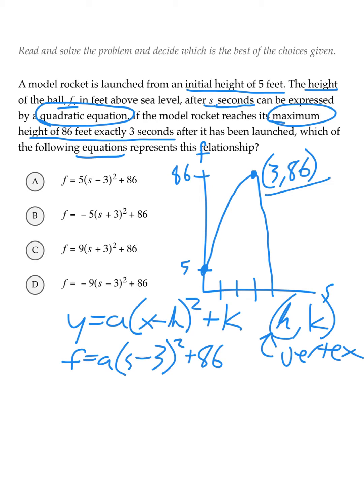We don't know a just yet, but looking at the equations and the answer choices, we could probably get rid of b and c, since they don't have a minus 3 inside the parentheses.